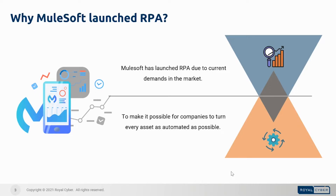Why did MuleSoft launch RPA? Hyper Automation requires the combination of integration, API management, and automation for companies to scale and increase the speed of work — from streamlining sales operations to speeding up customer case resolution. MuleSoft brings together integration, APIs, and automation all on one leading unified platform, making it possible for companies to turn every asset in their organization — such as data, bots, and applications — into reusable building blocks to create seamless digital experiences faster.